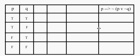In this example, we're going to investigate the various truth possibilities of the statement: if p, then not p or not q.